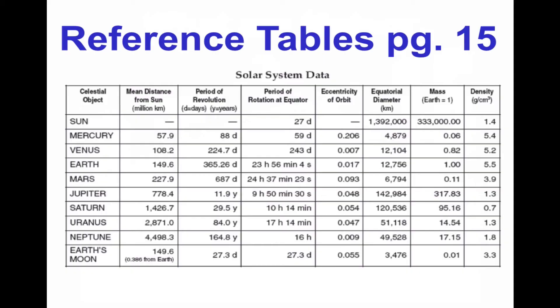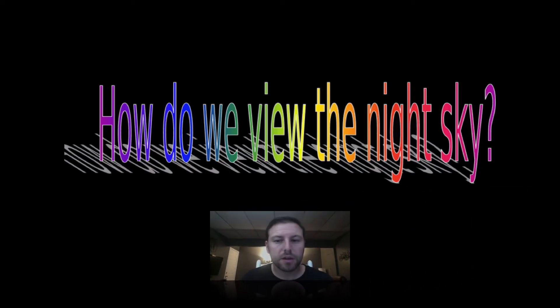Okay and that takes us back to page 15. Once again this is just a solar system data chart with all the different information about it. We'll go into this more later on or definitely in class. And then we're going to talk a little bit about constellations.